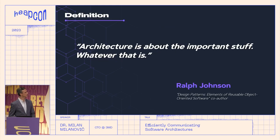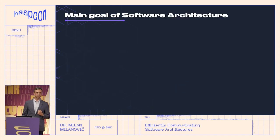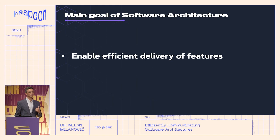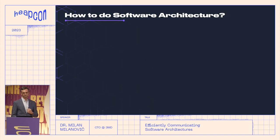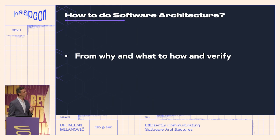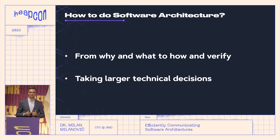I like this quote from Ralph Johnson, one of the authors of the Design Patterns book, that architecture is about important stuff, whatever that is. When we talk about goals of software architecture, we want first to enable efficient delivery of features to our end users and stakeholders, and of course to get feedback and a closed feedback loop from them to our team. And how we can do software architectures — first, we want to translate why and what to how and verify that, and to enable different requirements and system qualities through taking some larger technical decisions.